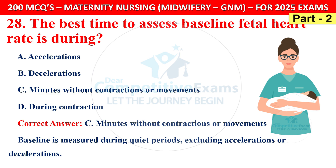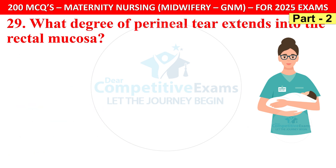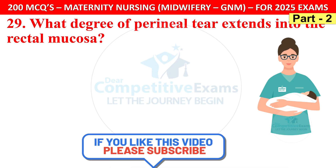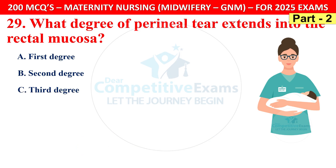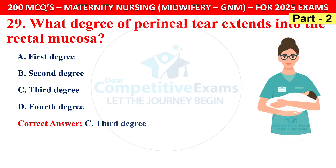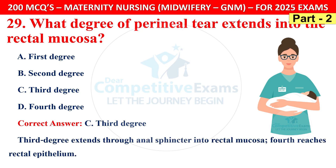Question 29: What degree of perineal tear extends into the rectal mucosa? Options are 1st, 2nd, 3rd, or 4th degree. The correct answer is C — 3rd degree. A 3rd degree tear extends through the anal sphincter into the rectal mucosa; 4th degree reaches the rectal epithelium.